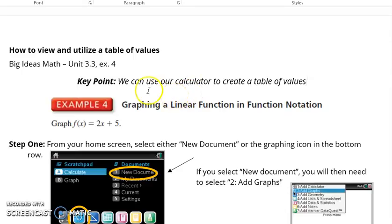For our example today, we're going to be using example 4 from chapter 3, section 3 of Big Ideas Algebra 1. In this example, we're graphing the function f of x equals 2x plus 5. And for the purpose of this problem, I also want to be able to graph this on paper, not just view it on my calculator screen.